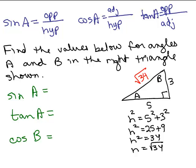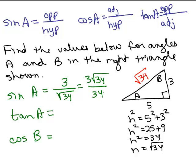Let's find the sine of A. Looking at angle A, sine is the opposite over the hypotenuse. The side opposite A is 3, and the hypotenuse is the square root of 34, so sine of A equals 3 over the square root of 34. If you rationalize the denominator by multiplying top and bottom by the square root of 34, you get 3 square roots of 34 over 34 — these are exactly the same value.